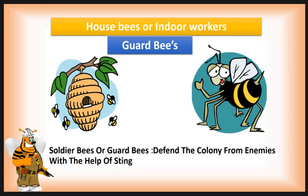The next indoor worker is the guard bee, also called soldier bee or scout bee. The function of the guard bee is to defend the colony from enemies with the help of the sting apparatus present on the tip of the abdomen. The main role of the guard bee is to protect the beehive from enemies. In extreme conditions, guard bees sting and sacrifice their life — the sting apparatus is cut from the body of the guard bee, causing them to die.